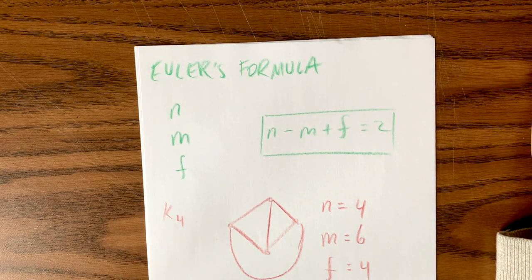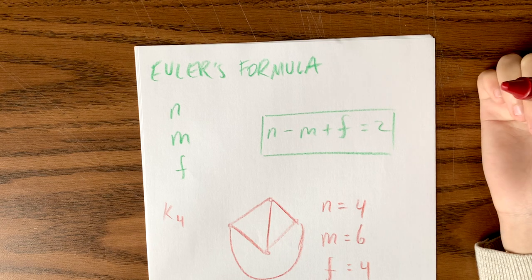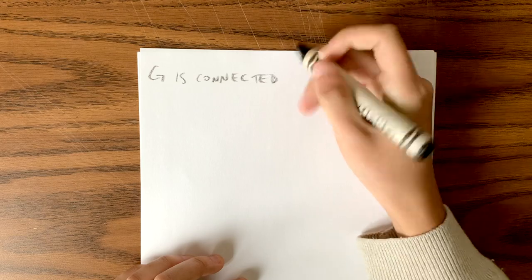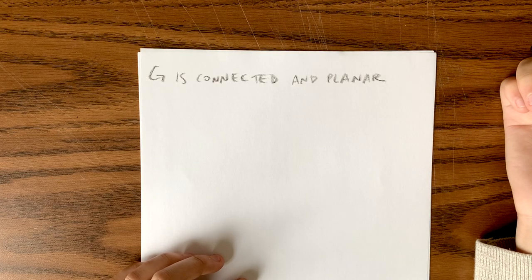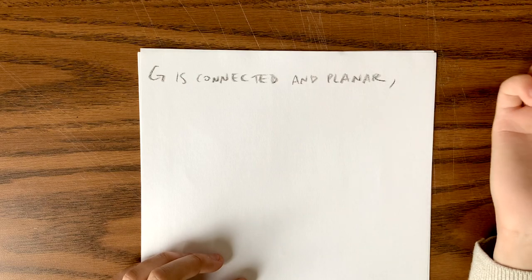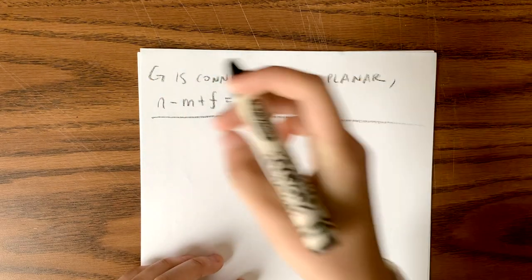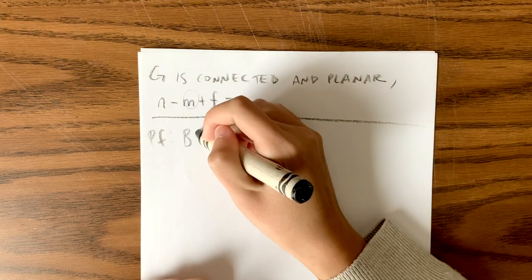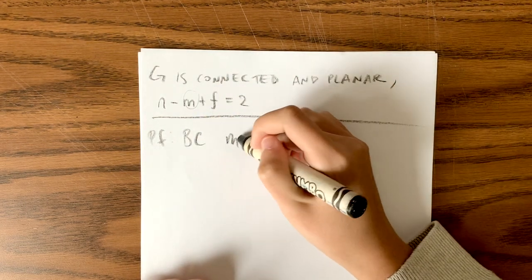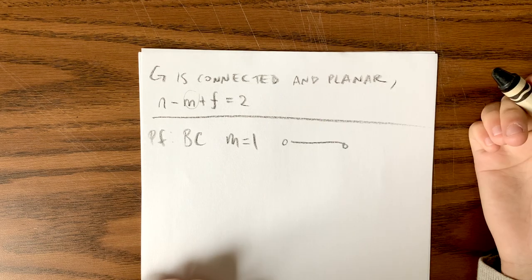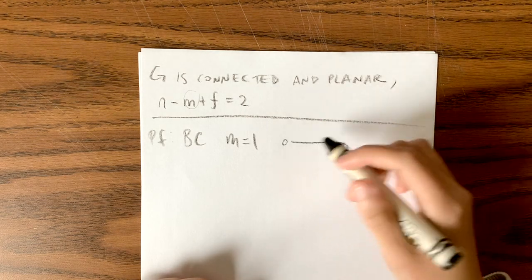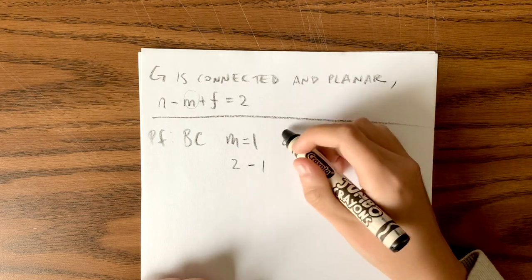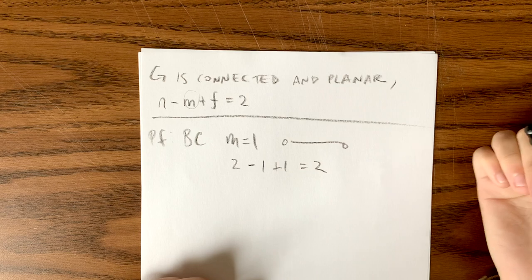But why does Euler's formula make sense? Let's do a proof sketch using induction on m, the number of edges. Let G be a connected planar graph and we want to show n minus m plus f equals 2. For the base case, let m equal 1: we have 2 vertices, 1 edge, and 1 face (the outside region), so 2 minus 1 plus 1 equals 2. The base case is true.